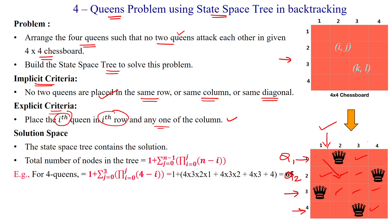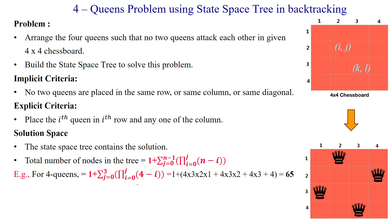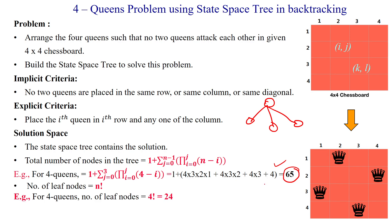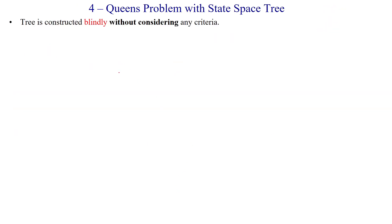When constructing the solution space using the state space tree, we have a formula to calculate the total number of nodes. The total number of nodes is 65 when constructing the state space tree. The total number of leaf nodes is n factorial — since n equals 4, we get 24 leaf nodes.